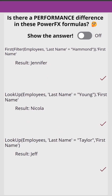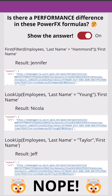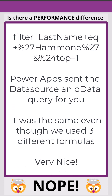And then finally we have a very similar approach: LookUp Employees, LastName equals 'Taylor', comma FirstName — very similar, just a different way of writing the same function. Its result is 'Jeff'. So does any of this matter? Nope. It turns out that if you look in Monitor, all three of these make the exact same API call to SharePoint.